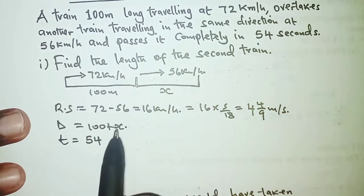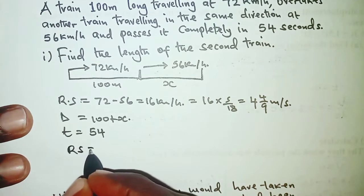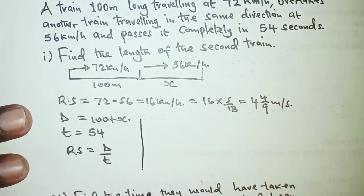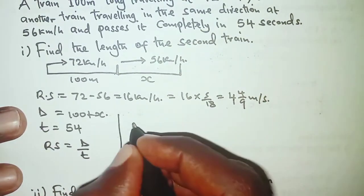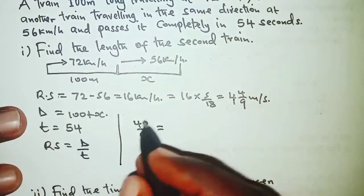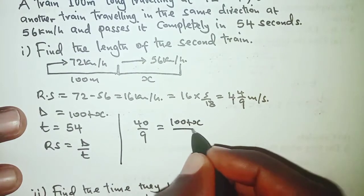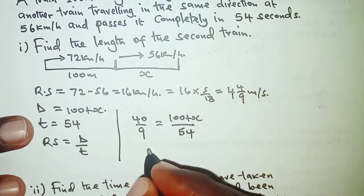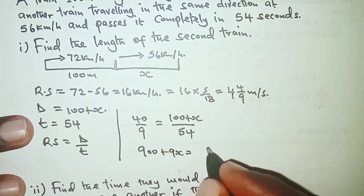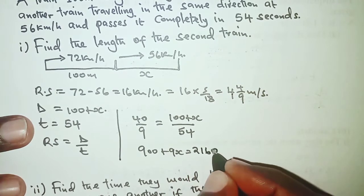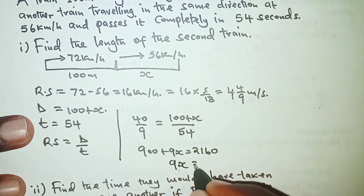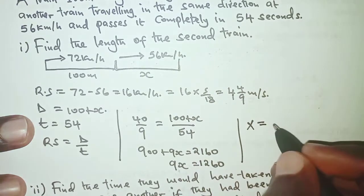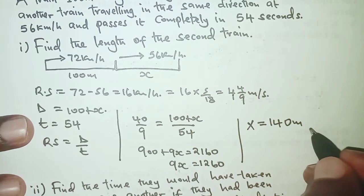The relative speed equals total distance over total time. The relative speed is 40 over 9, and that equals the distance 100 plus x over the time taken, which is 54. Cross multiplying gives 900 plus 9x equals 2160. Moving 900 to the other side: 9x equals 1260. Dividing both sides by 9, x equals 140 meters — that is the length of the second train.